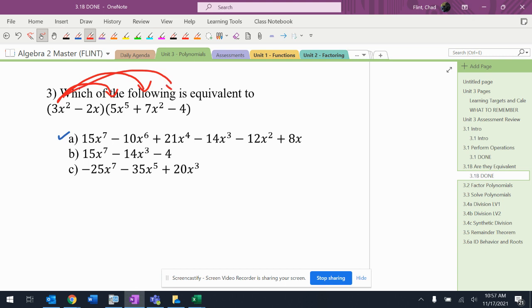I'm going to do that and that and that. Okay, 3x squared times 5x to the fifth is 15x to the seventh. I'm off to a good start. 3x squared times 7x squared is plus 21x to the fourth. 3x squared times negative 4 is negative 12x to the second.